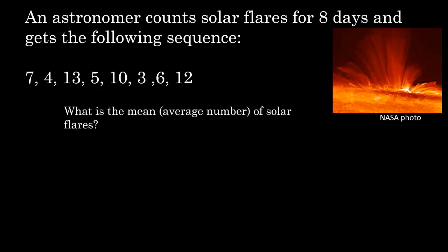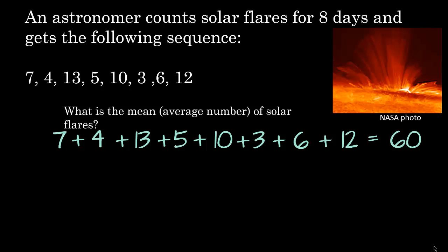What is the mean or average number of solar flares? Remember, we're going to add up our numbers first. 7, plus 4, plus 13, plus 5, plus 10, plus 3, plus 6, plus 12, and that's going to give us 60. So now what we have to do is divide 60 by the number of numbers we have. We have 1, 2, 3, 4, 5, 6, 7, 8. So we're going to take 60 divided by 8, and that turns out to be 7.5. So our mean is 7.5.